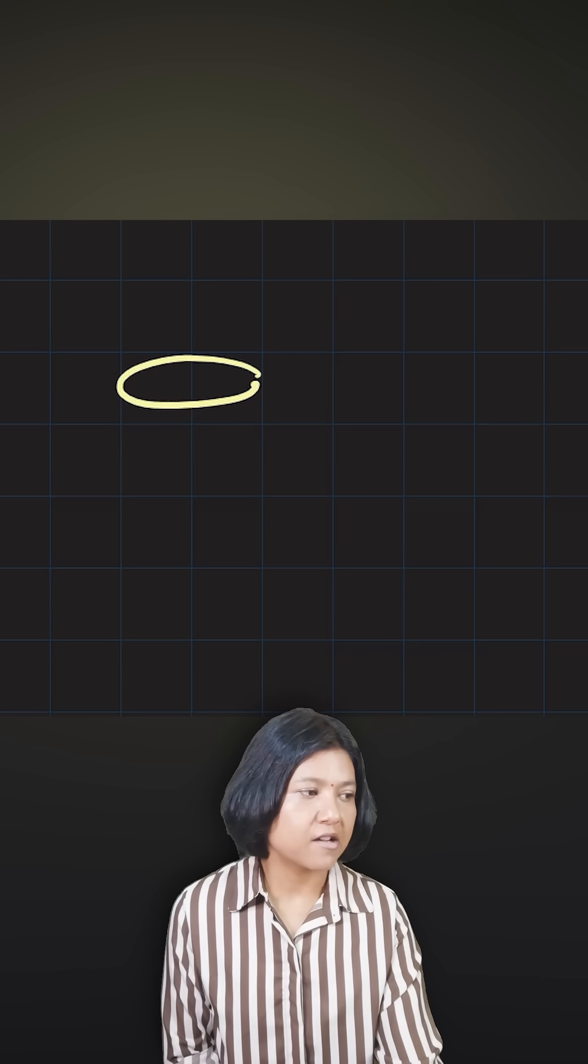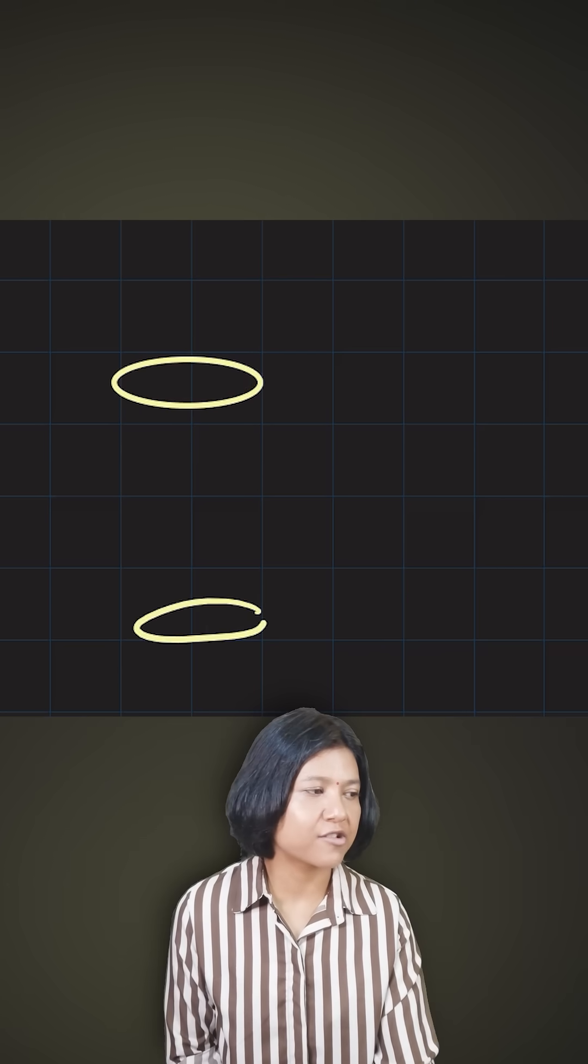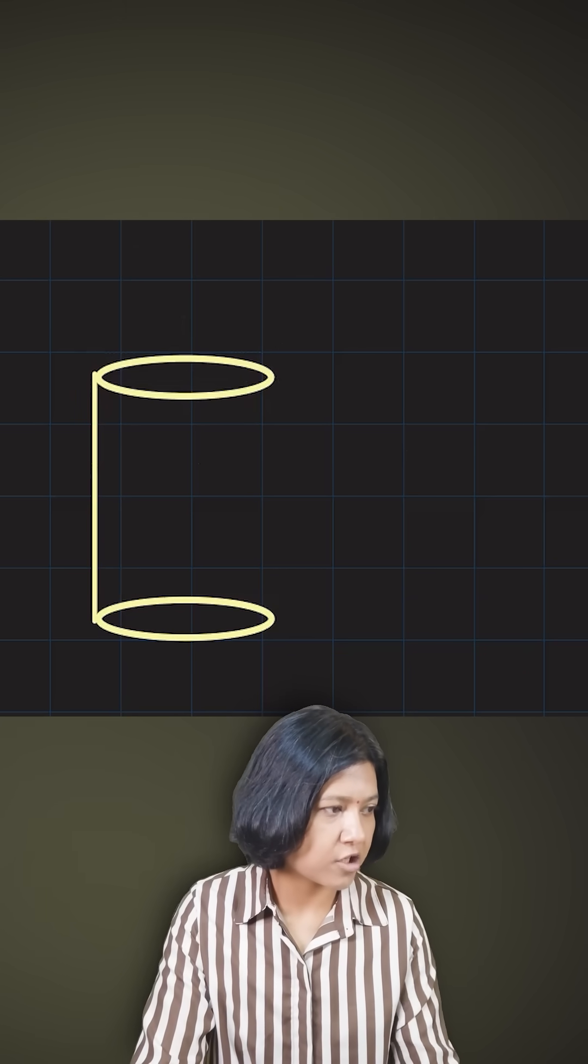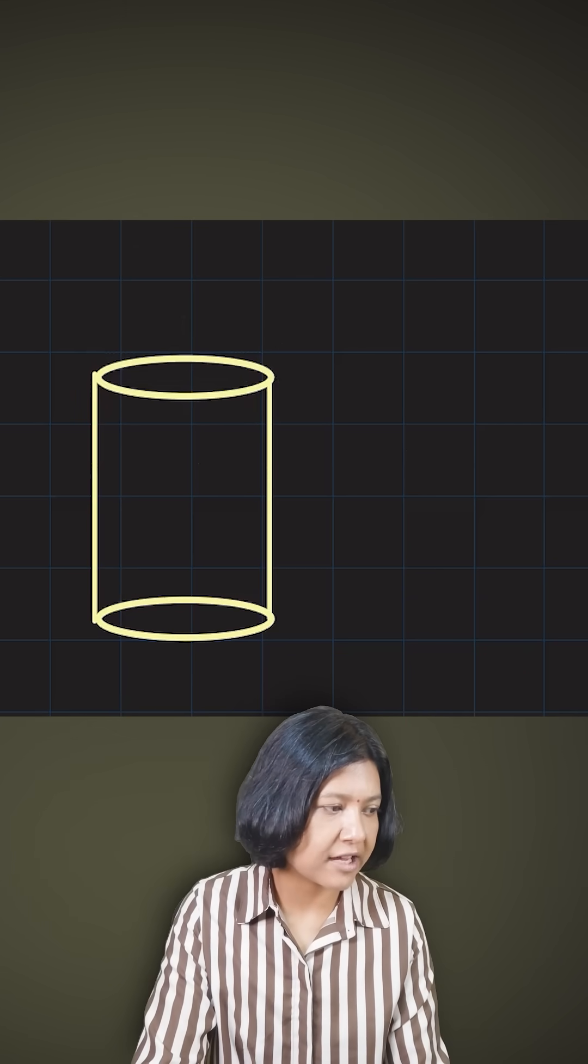So what is curved surface area of a cylinder? Imagine a cylinder. A cylinder is characterized by having two circular bases like this. Now between the two circular bases, what you really have is this curved area.